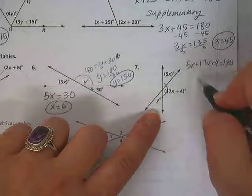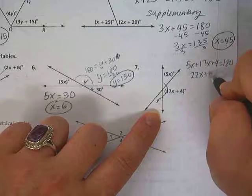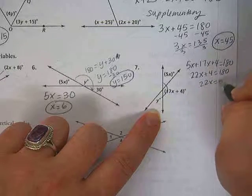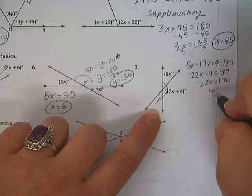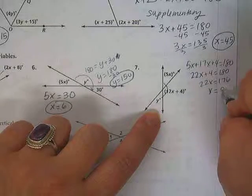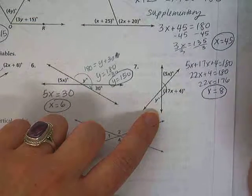Okay, number 7, that was the one I mostly wanted you to do. 5x and 7x is 22x. Subtract the 4, so 22x equals 176. Divide the 22, so 176 divided by 22? 8. Okay, then once we've found the 8, what do we do with that?